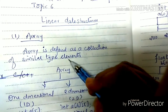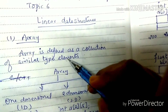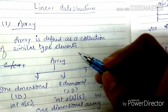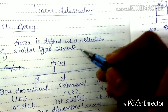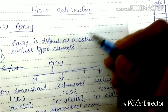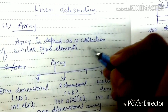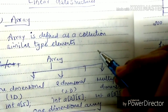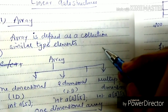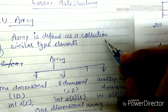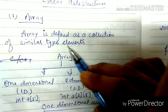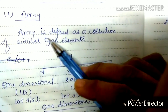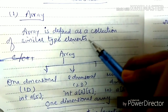Array is defined as a collection of similar type elements. For example, 10 integer numbers, 10 characters, 10 real numbers — a collection of elements of the same type. So when we store similar type elements, we use an array. This is why array is defined as a collection of similar type elements.